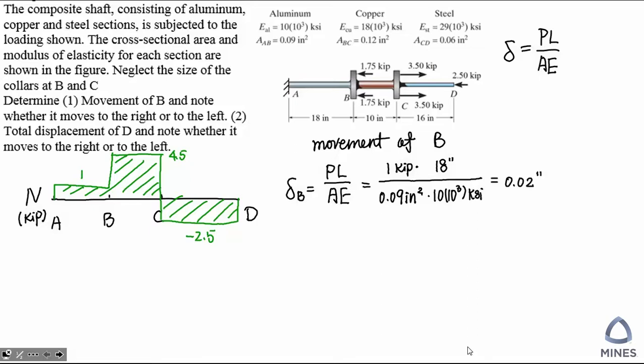The result is positive. Going back to the axial load diagram, 1 kip is tension, which means the AB segment will elongate instead of shorten under the tension force. That's why the movement of B with respect to the fixed end A will go to the right.